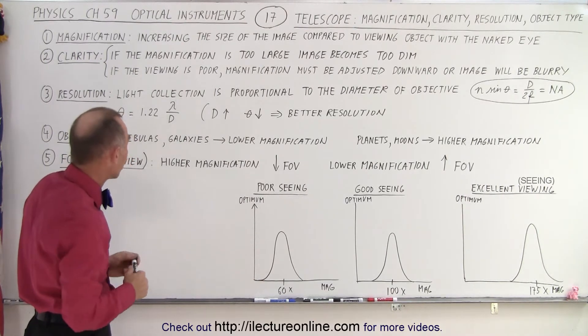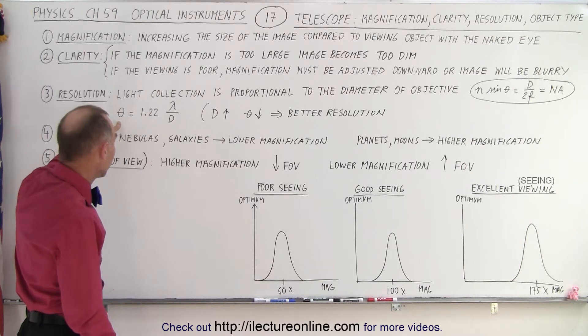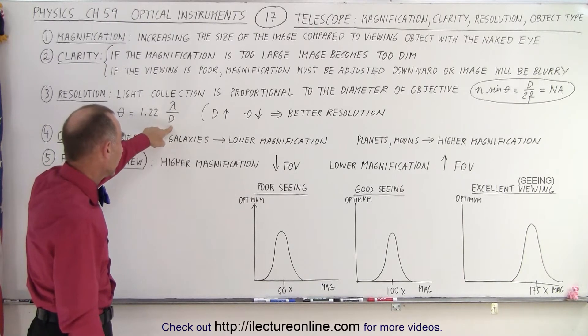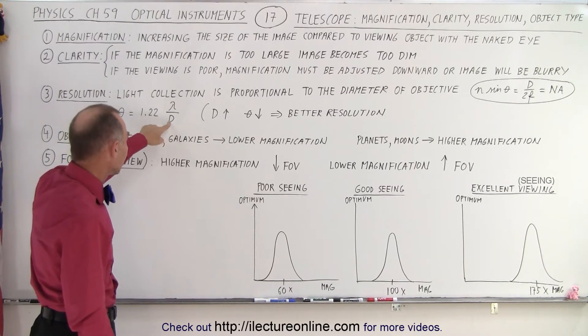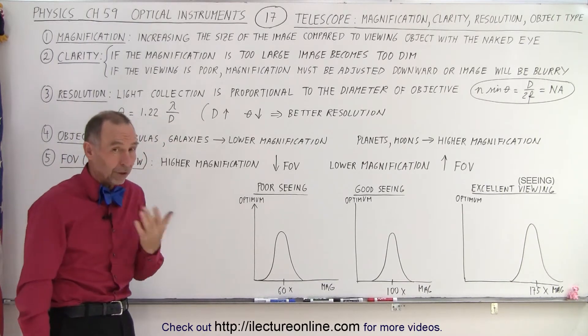The resolution tends to increase, so this is the equation for the resolution angle: θ = 1.22 λ/D. You can see that the diameter d is here in the denominator, so the bigger d is, the smaller the resolution angle, which is what it's all about.